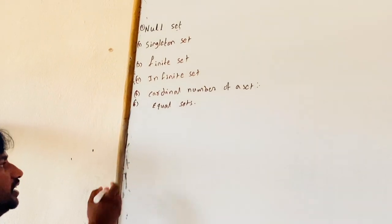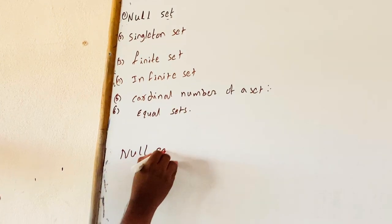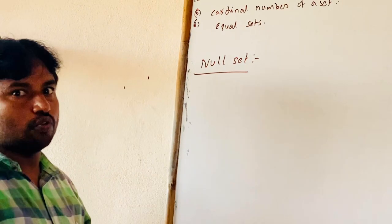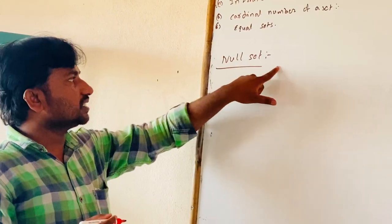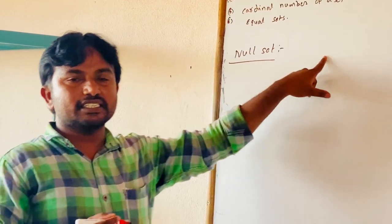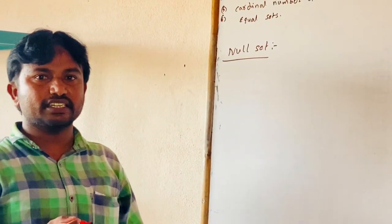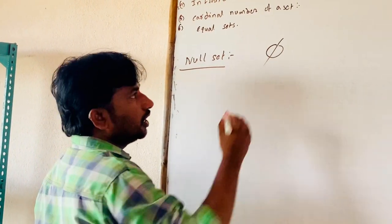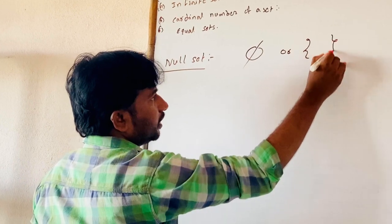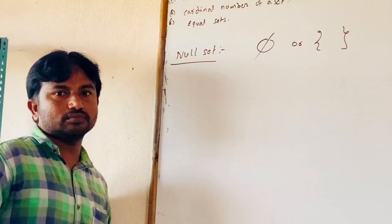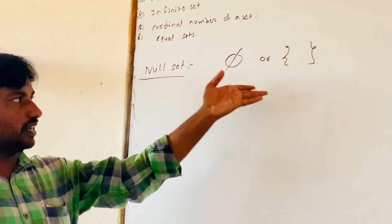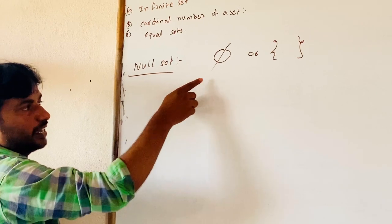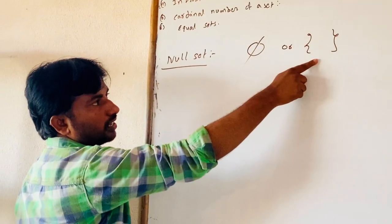The first type is a null set. This is also called an empty set or a void set. A null set is a set with no elements. A null set is denoted by the symbol phi or empty curly brackets.